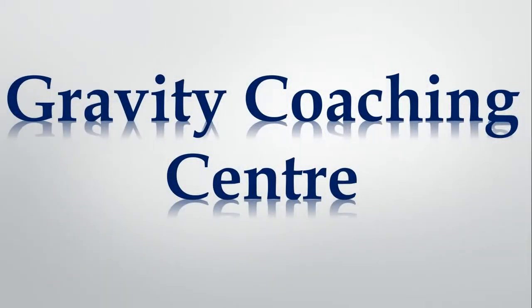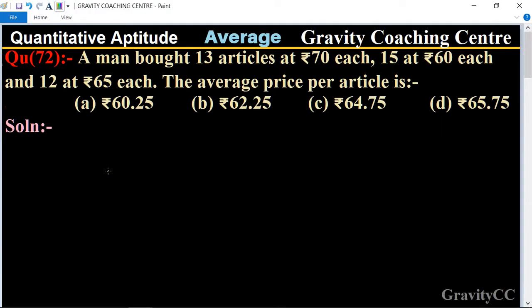Welcome to our channel, Gravity Coaching Center. Quantitative Aptitude, chapter Average, question number 72. A man bought 13 articles at ₹70 each, 15 at ₹60 each, and 12 at ₹65 each. The average price